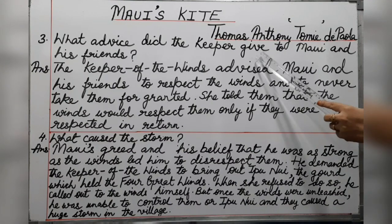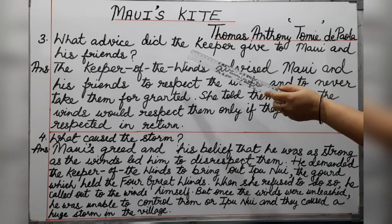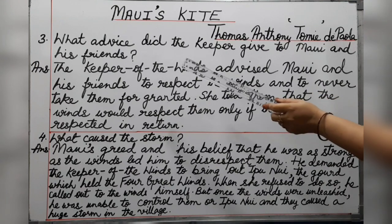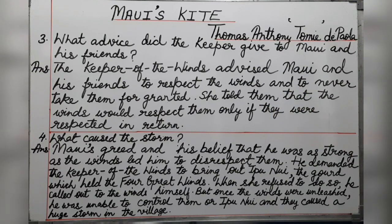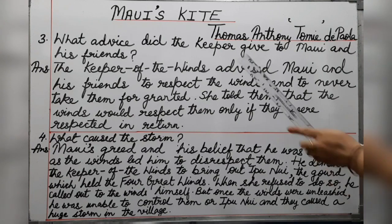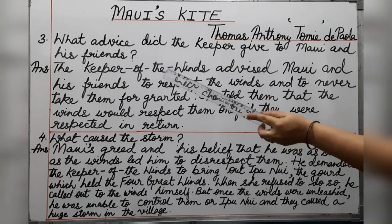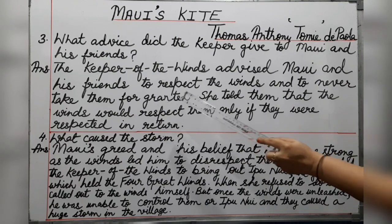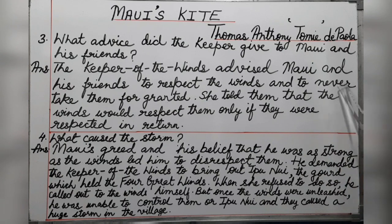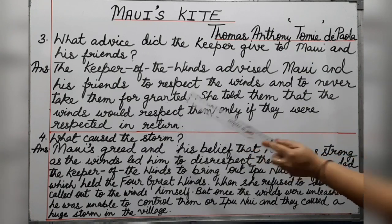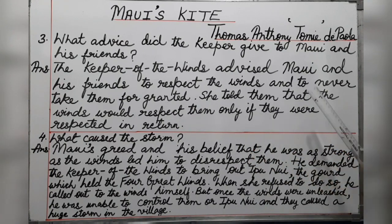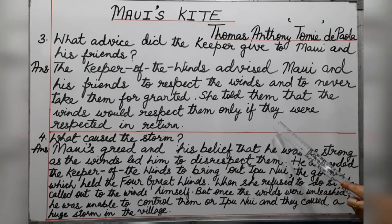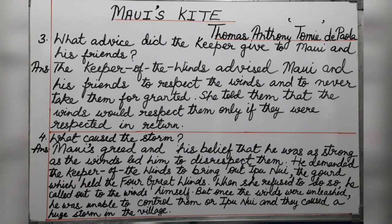Question 3: What advice did the keeper give to Maui and his friends? The keeper of the winds advised Maui and his friends to respect the winds and to never take them for granted. She told them that the winds would respect them only if they were respected in return.